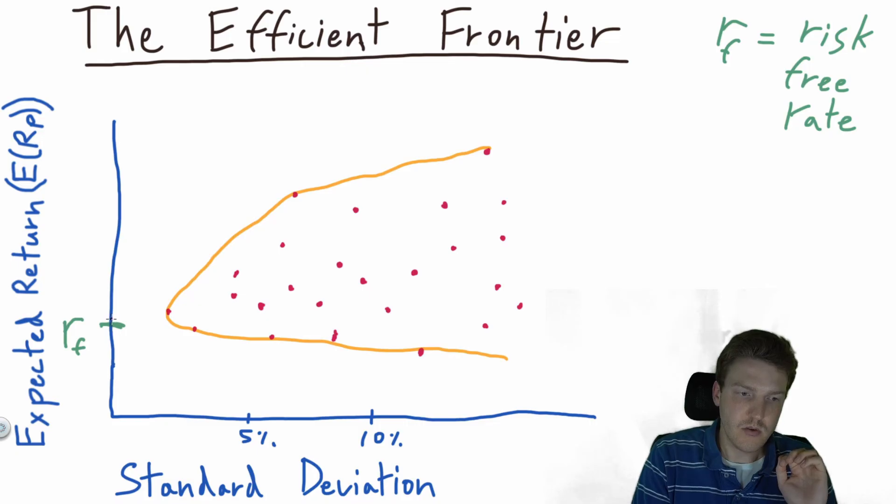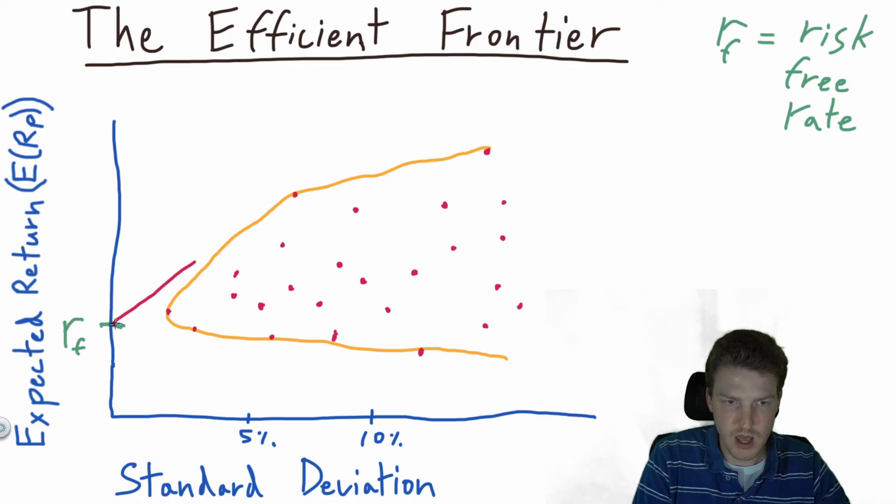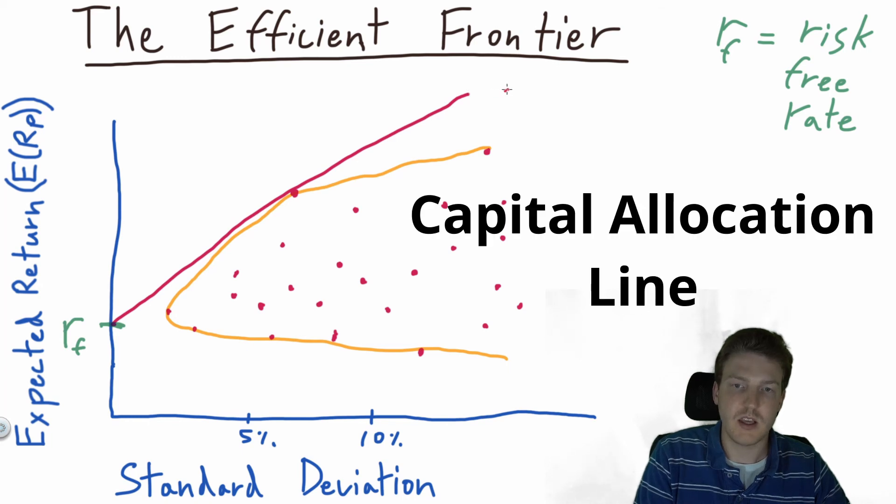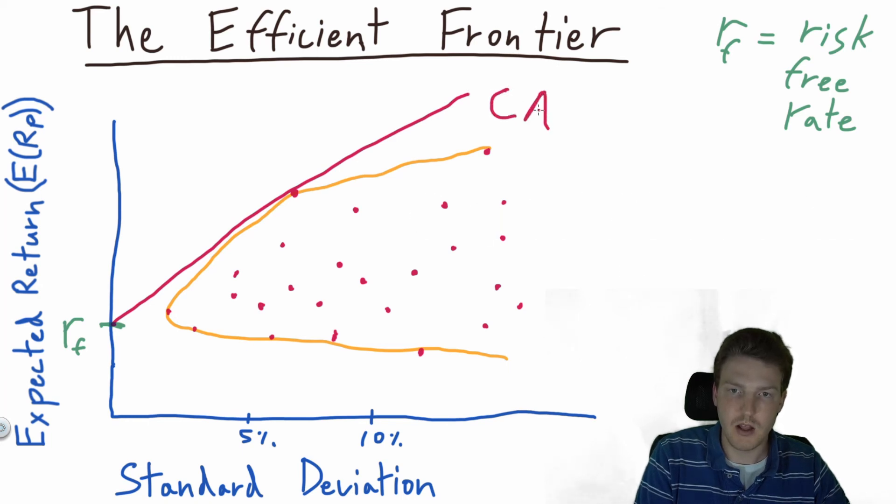If we draw a straight line that intersects with the efficient frontier, where is the tangential point? So if we do that - oh, let me start over. That was a bad line. So if we do that, we see that this portfolio right here is the tangential point on the efficient frontier. And then we call this red line the capital allocation line, or CAL line.